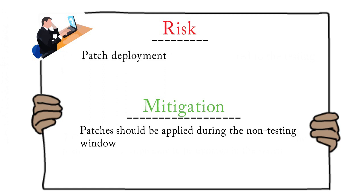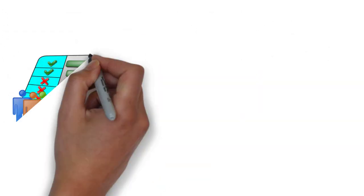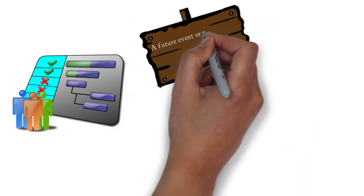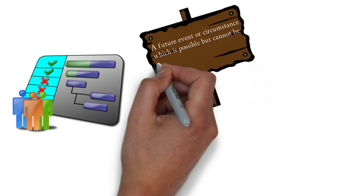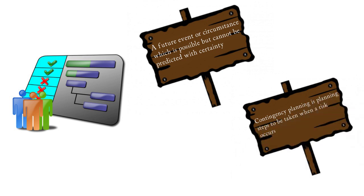We have discussed different types of risk which can occur in a project and we have discussed the mitigation plan for those. Hope everyone is clear with risk and mitigation. Now let's get into the contingency plan. The definition of contingency is a future event or circumstance which is possible but cannot be predicted with certainty. Contingency planning is the planning steps to be taken when a risk occurs. The difference between mitigation and contingency is that mitigation plan is derived to avoid the risk, whereas a contingency plan is made when a risk has already occurred.